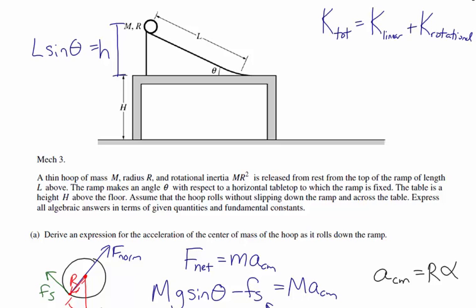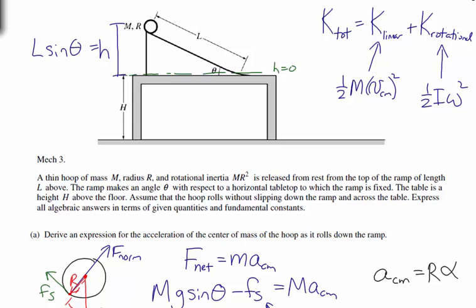The linear kinetic energy is one-half M times the velocity of the center of mass squared. The rotational kinetic energy is one-half times the rotational inertia times the angular velocity squared. I'm calling the height zero at the bottom of the ramp. At the beginning there's only potential energy since it's released from rest. At the bottom there's only kinetic energy. So I'll apply conservation of energy.